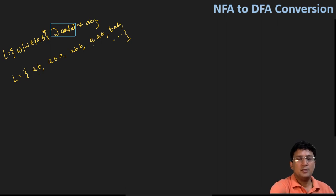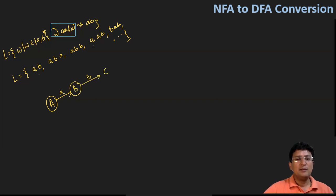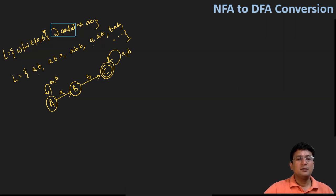For the NFA, the smallest string 'ab' should be accepted. Starting from state A, on symbol 'a' I move to state B, and on symbol 'b' I move to the final state C. In the start, I can get 'a' and 'b', but once I get 'ab', it will be accepted. Similarly, if I get any symbols after getting 'ab', it will remain in the final state. This is a very simple NFA.